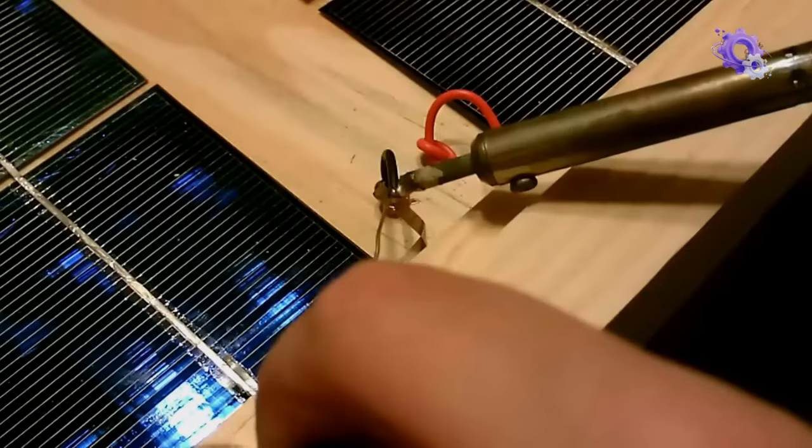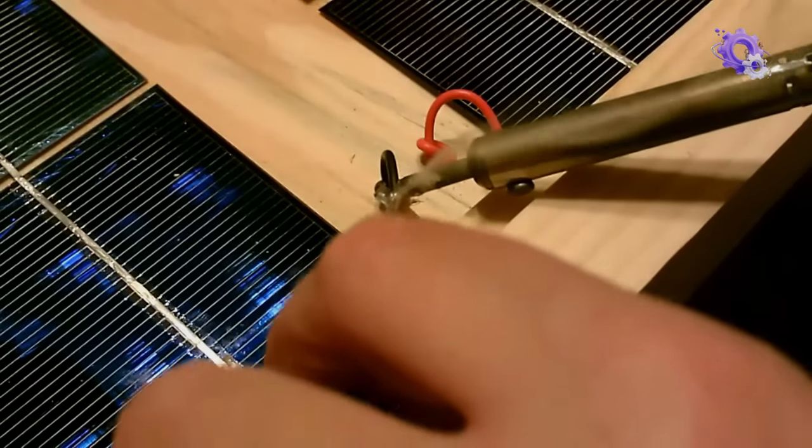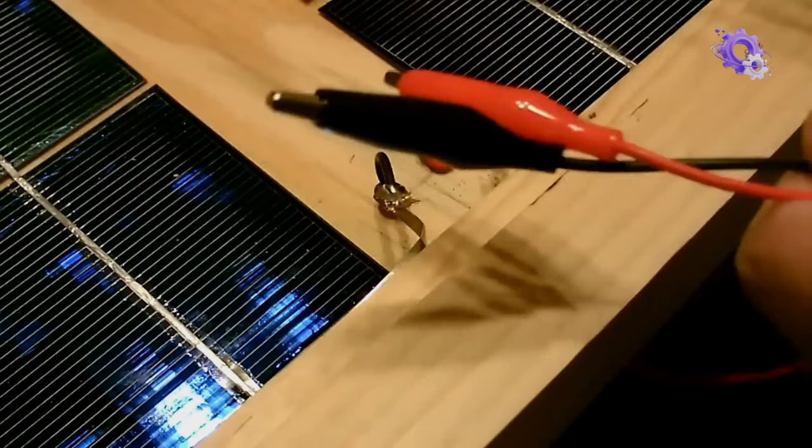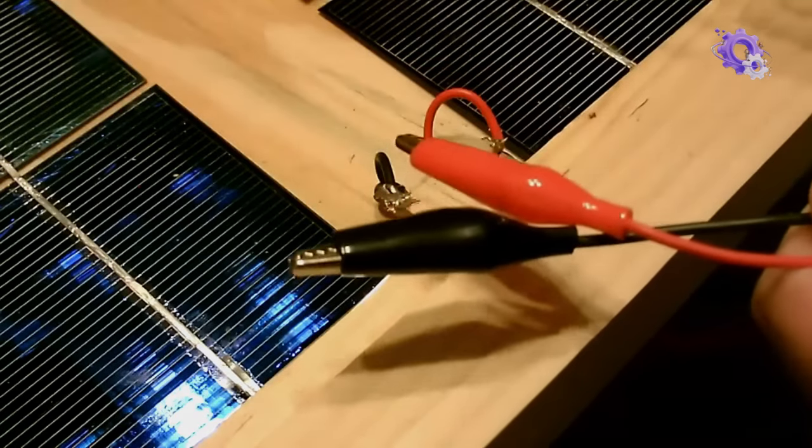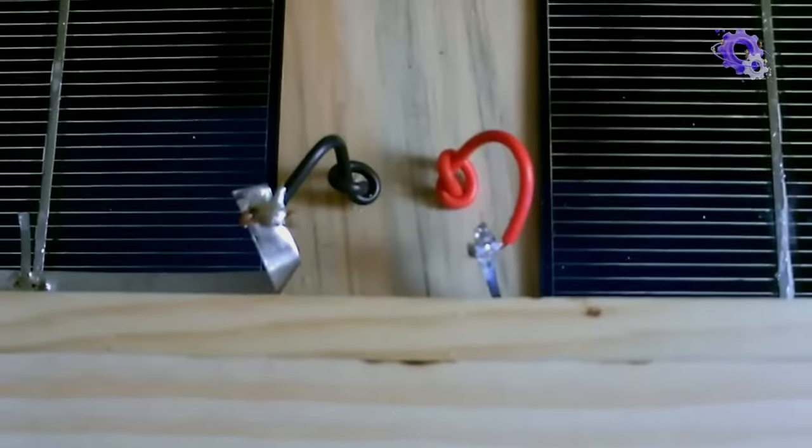Proper wiring is essential for ensuring the efficient flow of electricity generated by your solar panel. This involves connecting the solar cells in series or parallel configurations depending on your desired voltage and current output.